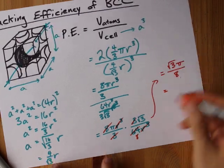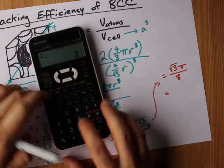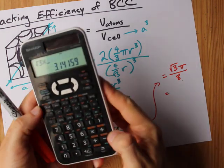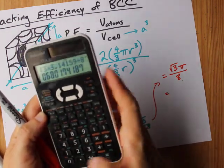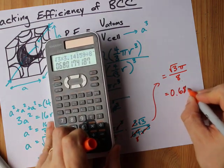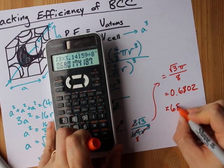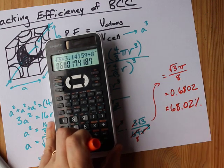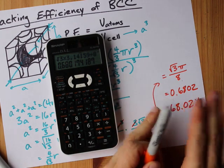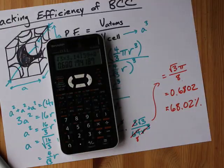I can do that on my calculator and we'll see what the number turns out to be. That's the square root of three times pi, I'll do 3.14159 divided by eight. I end up with 0.6802 or a packing efficiency of 68.02 percent. Now that's more efficient than simple cubic, which we calculated in a previous one to be 52 percent efficient.